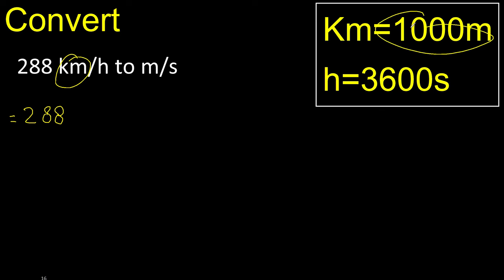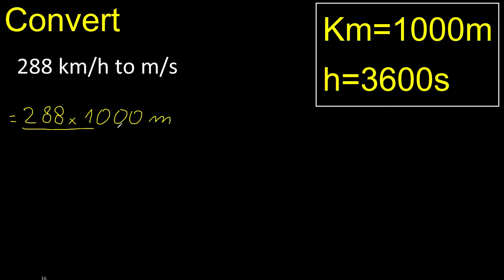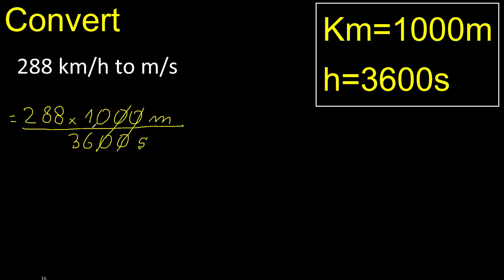Our is here. Multiply. Our is here. The last digit is 0, therefore eliminate.